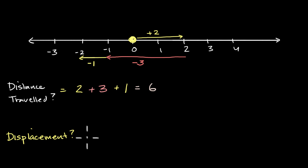Well displacement is going to be equal to your final position. We'll use x, let's say this is the x-axis. So we'll say x final, your final position, minus your initial position. It's really just your change in position. So what is your change in position here? Well your final position is at negative two, x equals negative two. And your initial position, you started at zero. So negative two minus zero is equal to negative two.